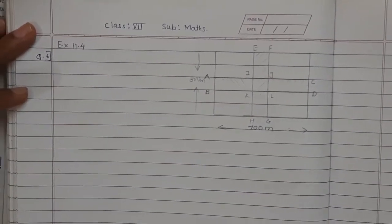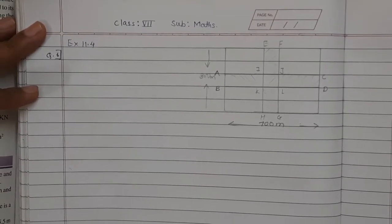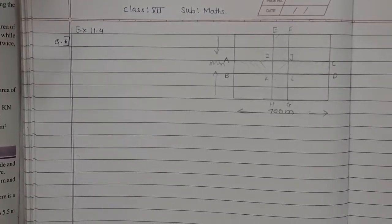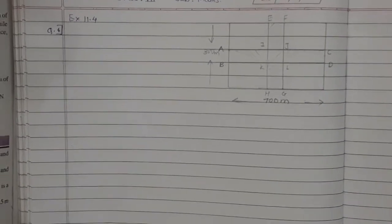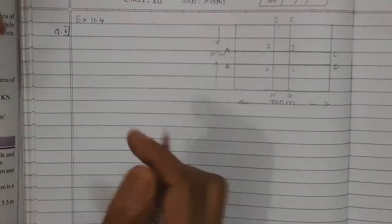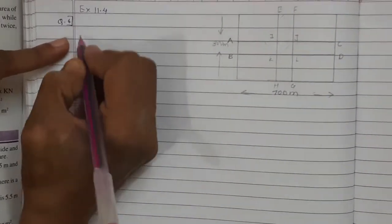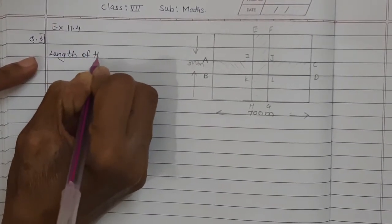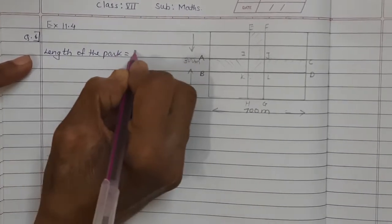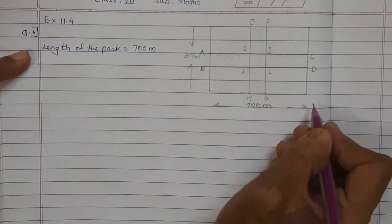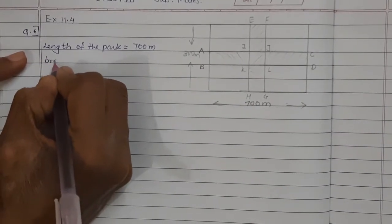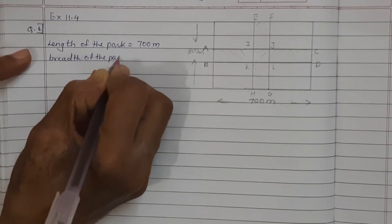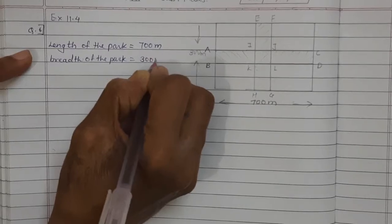So now what is given? Length of the park is given 700 meter. See this is the length of the park, 700 meter. Now breadth of the park — breadth of the park is given 300 meter.